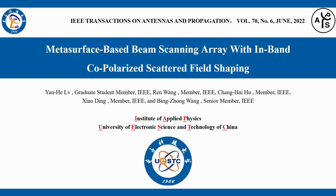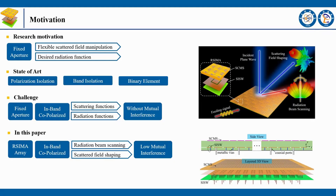This video briefly introduces a metasurface-based beam scanning array with in-band co-polarized scattered field shaping. Due to the rise of multifunctional antennas and increasingly complex application environments, some novel antenna designs have taken simultaneous control of radiation and scattered fields into account. To solve this issue, some recent works have attempted polarization isolation, band isolation, and binary element methods.